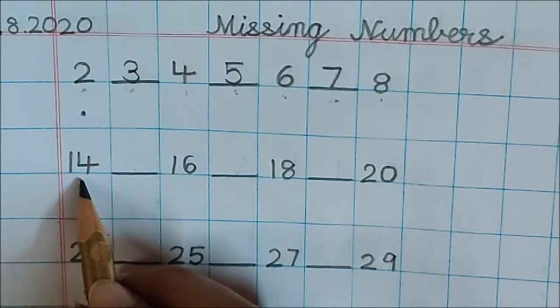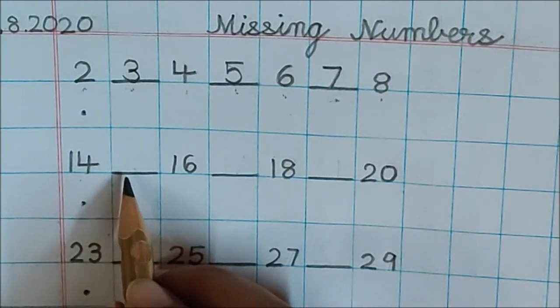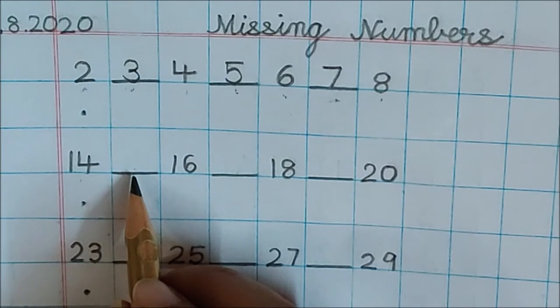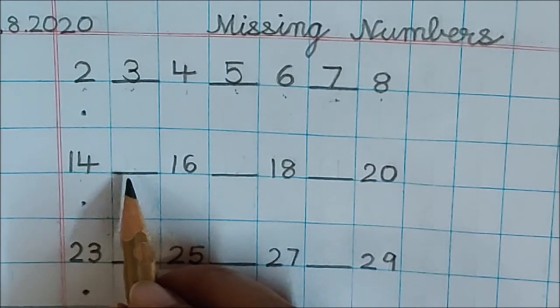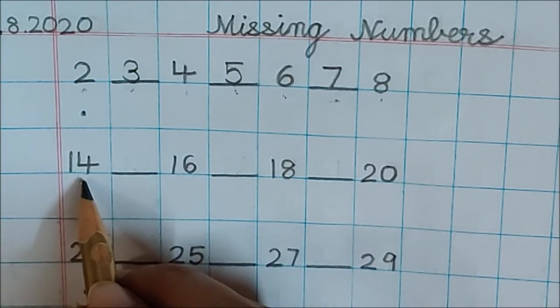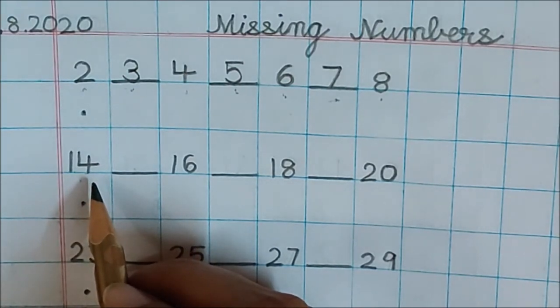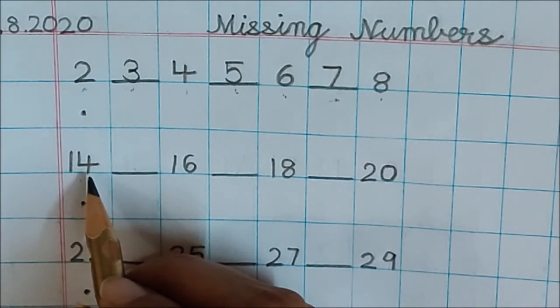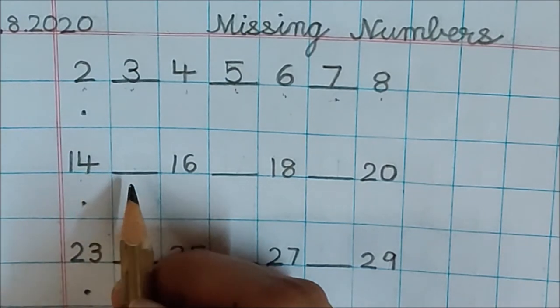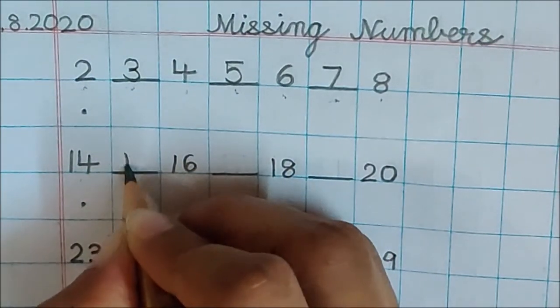What is the first number here? 14. What comes after 14, children? If you don't know, count till number 14. And you will get your answer. 1, 2, 3, 4, 5, 6, 7, 8, 9, 10, 11, 12, 13, 14, 15. So write down here 15.